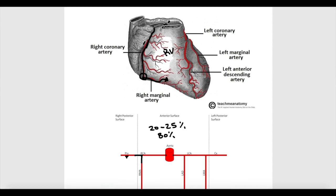Now let's go to the left coronary artery. The left coronary artery also originates from the ascending aorta. It runs between the pulmonary artery and the left auricle, then between the pulmonary artery and the left atrium, and then emerges on the anterior surface of the heart.